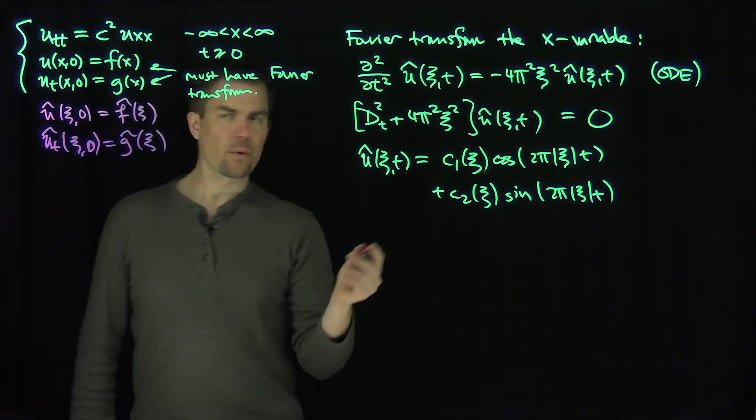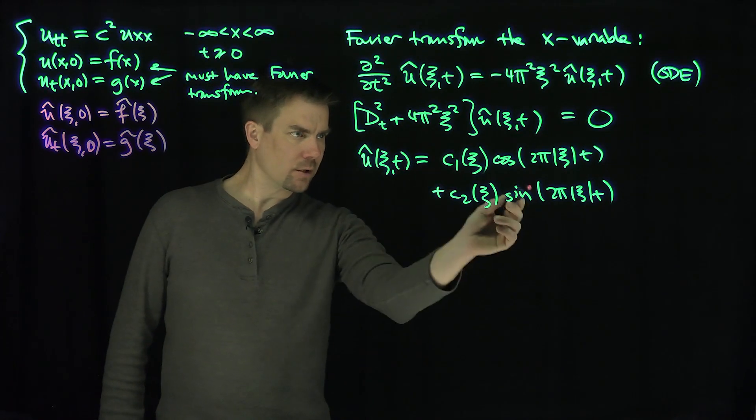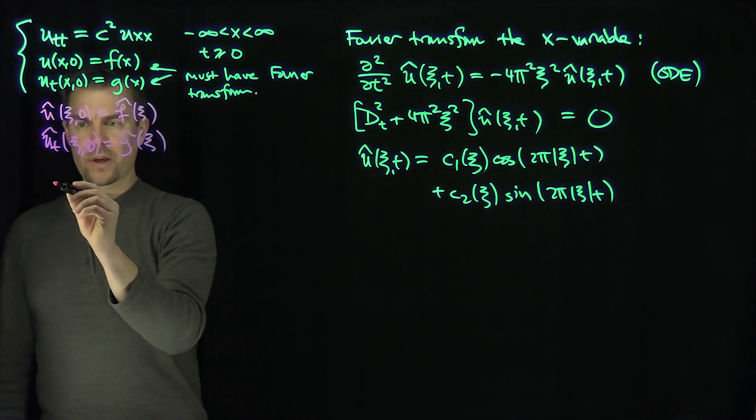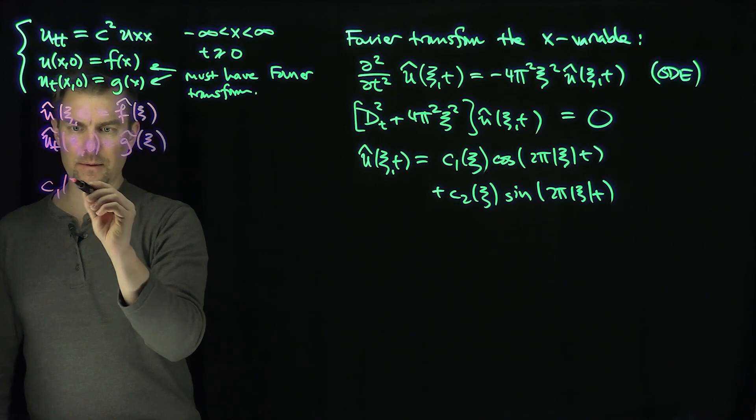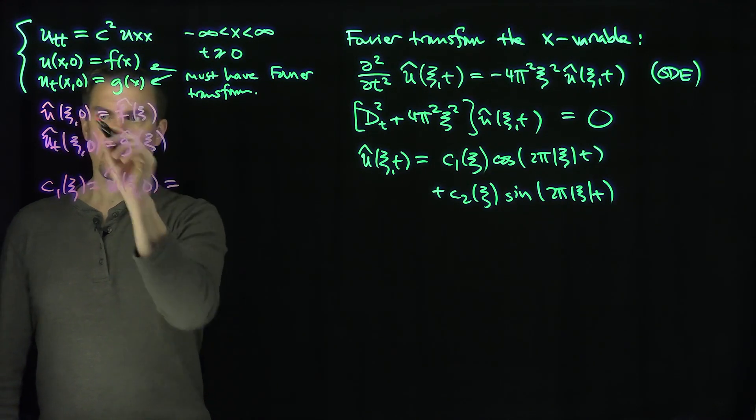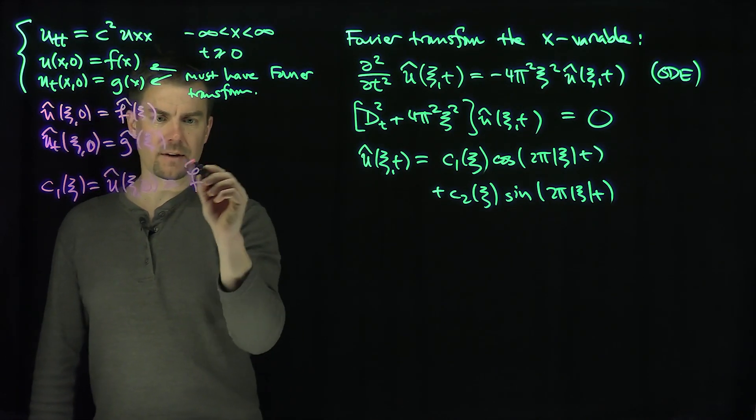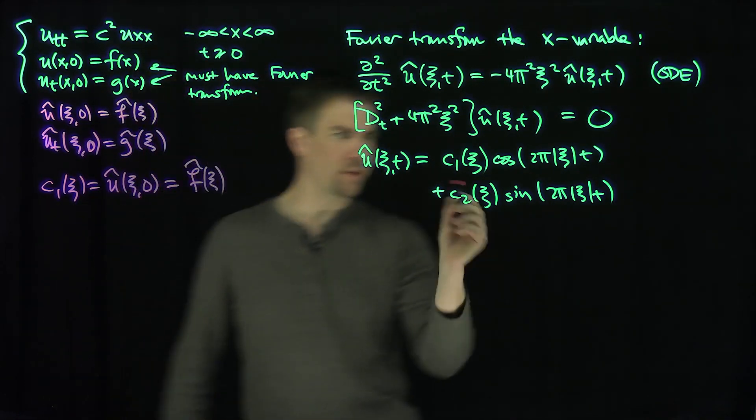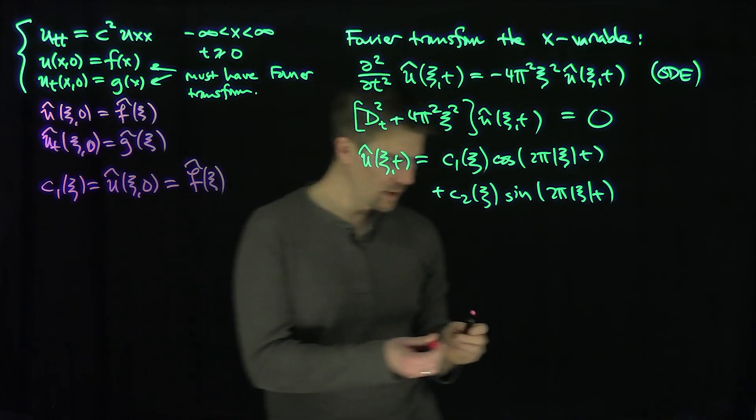And so now what? And so now when I plug in, so when I plug in zero to this formula, we can conclude what? We can conclude that c1 of xc is u hat of xc zero has to be the same thing as just f hat of xc. So we can replace the c1 with f hat of xc. That's great.